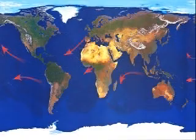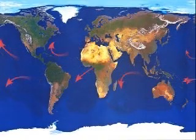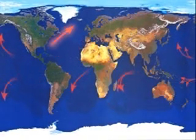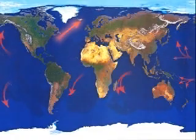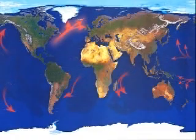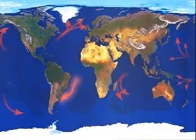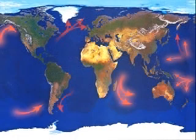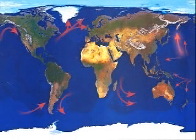Currents originating from the equatorial regions carry warm water. There's the Gulf Stream and North Atlantic Drift, the Brazil Current, the North and South Equatorial Currents, and the Kuroshio.